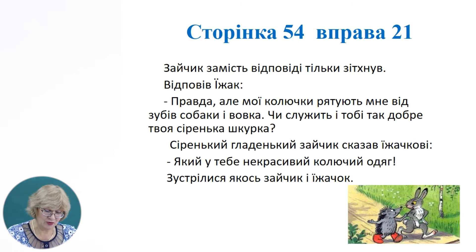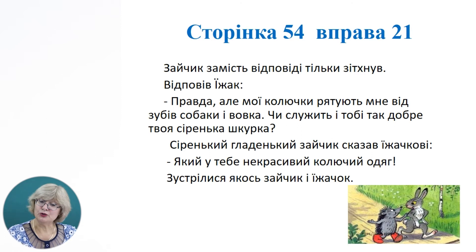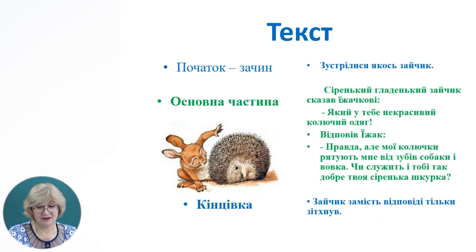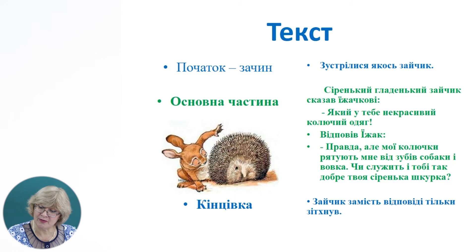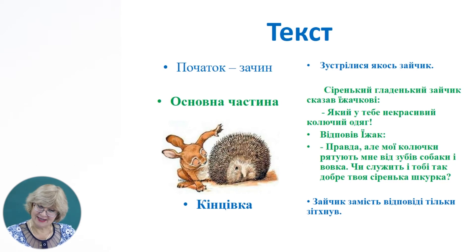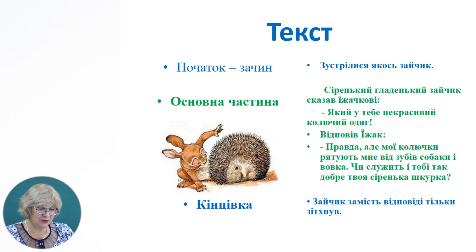Давайте знайдемо зачин до тексту. З чого починається текст? Напевно, з того, що «зустрілися якось зайчик і їжачок» — поставимо це першим реченням. Знайдемо основну частину тексту: «Сіренький гладенький зайчик сказав їжачкові: Який у тебе некрасивий колючий одяг. Відповів їжак: Правда, але мої колючки рятують мене від зубів собаки і вовка. Чи служить тобі так добре твоя сіренька шкурка?» Це основна частина. І кінцівка тексту: «Зайчик замість відповіді тільки зітхнув».